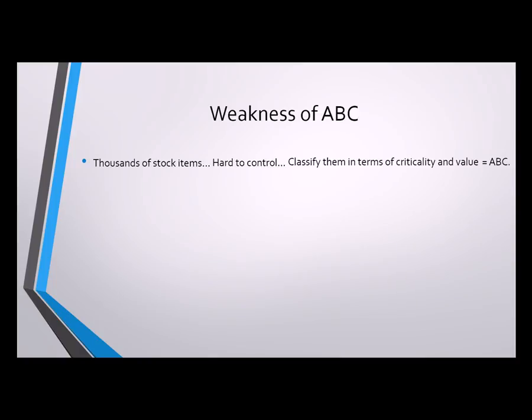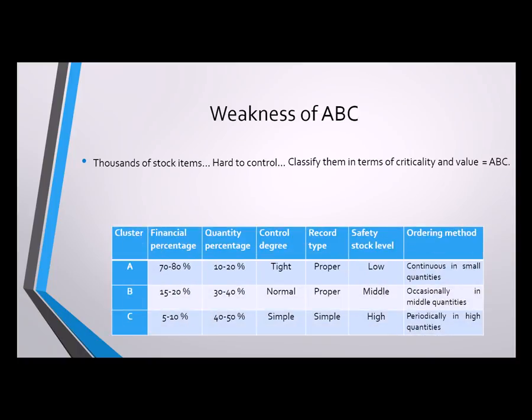ABC analyzes stock items under three groups: A, B, and C. Class A has the highest financial volume, is not in the auto purchasing process, and consists of close-control required items. Items in this class form 80% of the stock investment but constitute only 20% of the total number of parts.